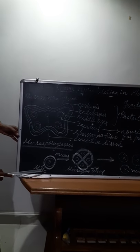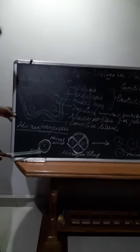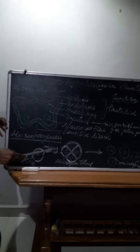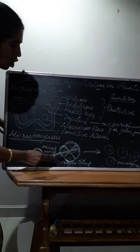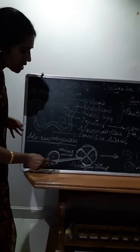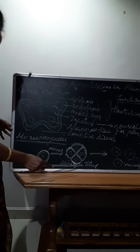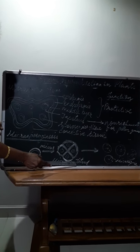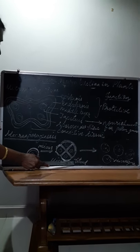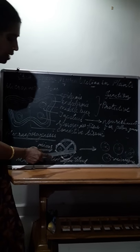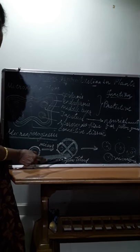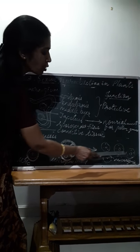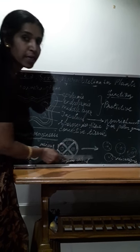The microspore mother cell undergoes meiosis, meiotic division and it produces how many cells? Four cells, four microspores, what we call it as microspore tetrad. After some time, what will happen, these microspore tetrad undergoes dehydration and the four microspores are released.